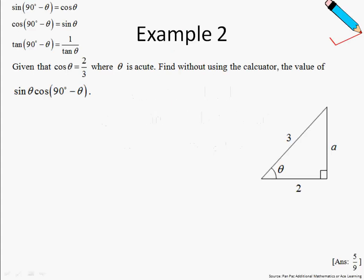So in example number 2, given that cosine of theta is 2 thirds, where theta is acute, find without using a calculator the value of sine theta multiplied to cosine 90 degrees minus theta.